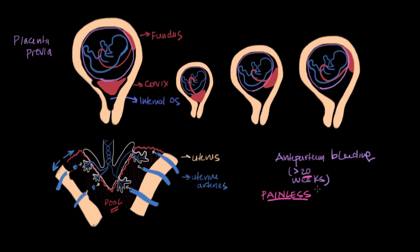And if that's suspected, if placenta previa is suspected, the very first thing we do is an ultrasound. So we slap an ultrasound onto the belly to visualize the location of the placenta.